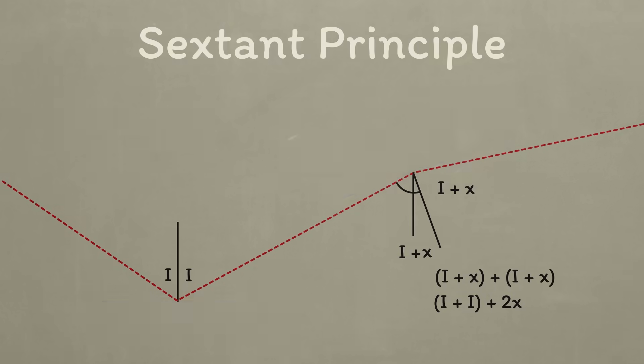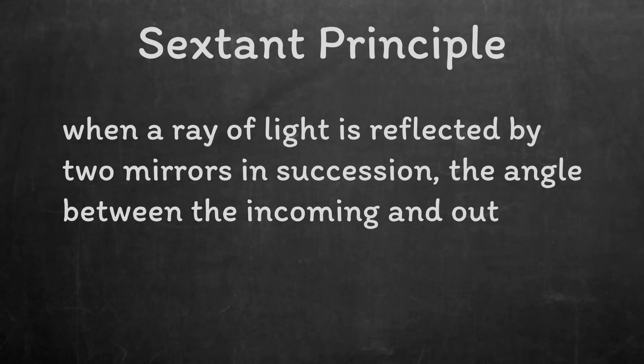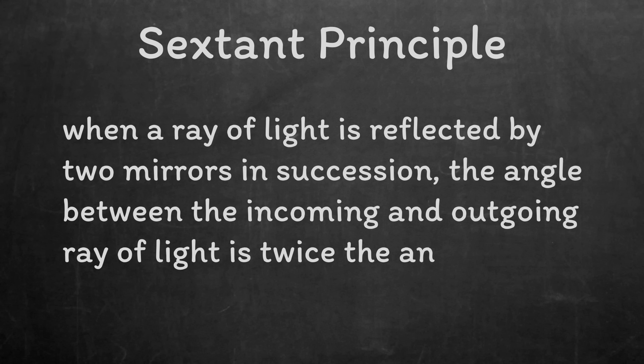This is the sextant principle. When a ray of light is reflected by two mirrors in succession, the angle between the incoming and outgoing ray of light is twice the angle between the mirrors. Now that we understand the principle, we can head back to the sextant and see it properly in action.